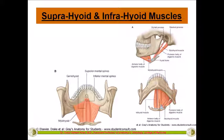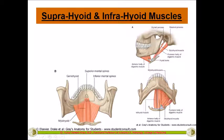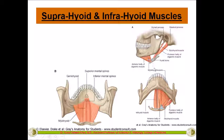Students, we will now try to understand the suprahyoid and infrahyoid muscles. Suprahyoid muscles are those muscles which are above the hyoid bone. This is the hyoid bone which is present in the neck. The muscles which are above it are called suprahyoid muscles — 'supra' means above. The muscles which are below the hyoid bone are called infrahyoid muscles — 'infra' means below.